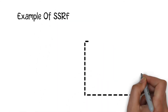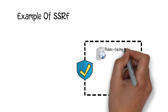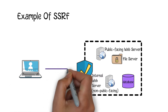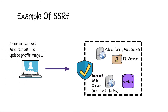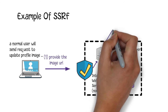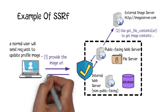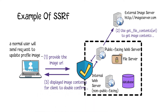Let's illustrate this through an example. In most web servers there will be services which enable clients to provide data from the external world, such as updating a profile image or redirecting to other pages. For example, there is a page which enables users to update their profile image by uploading one from another website. In a normal case, the client provides the image URL to the server, then the web server calls a function such as get_file_contents(url) to fetch the image contents, which are displayed for the customer to confirm. If accepted, the image is saved to the database and the customer is redirected to a confirmation page.